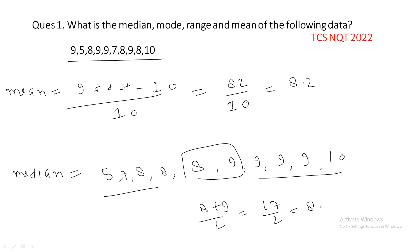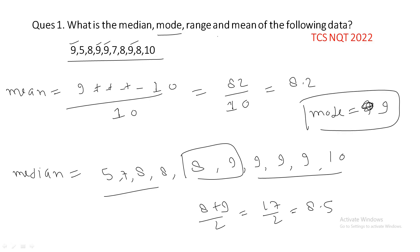The median is 8.5. Now for mode — mode is what occurs most frequently. Here, 9 occurs 4 times, so the mode is 9. For range, range is maximum minus minimum. The maximum number is 10 and the minimum is 5, so the range is 5.